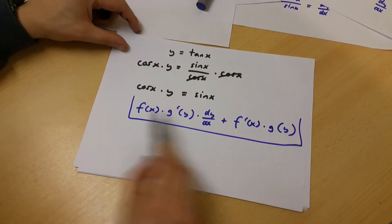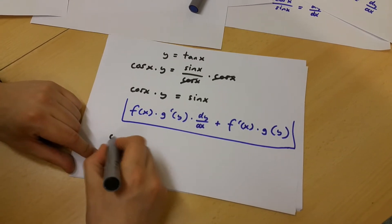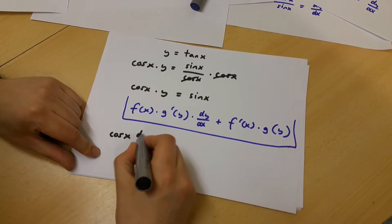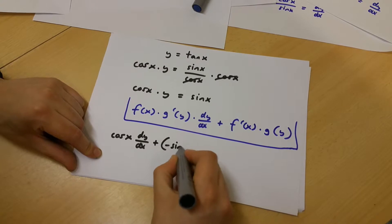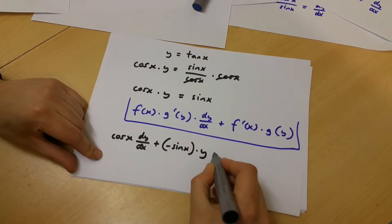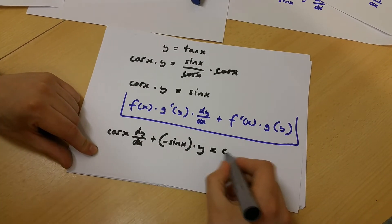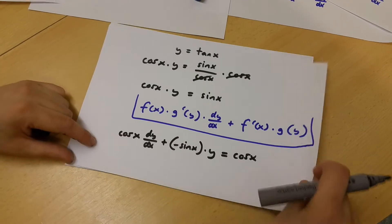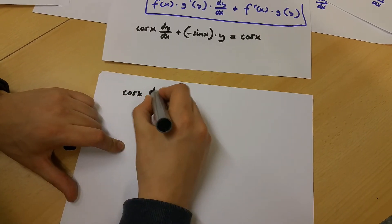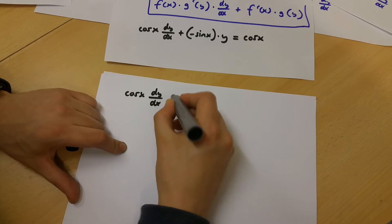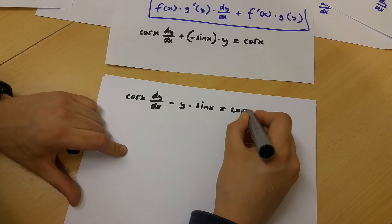If we use this formula to differentiate this, we are going to get cos x multiplied by dy/dx plus minus sin x multiplied by y, which is equal to cos x — that is sin x differentiated. So we have cos x multiplied by dy/dx minus y times sin x is equal to cos x.